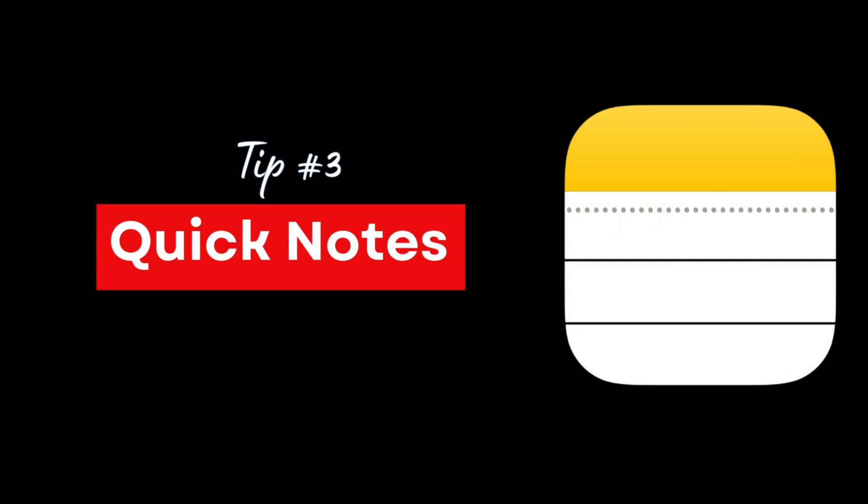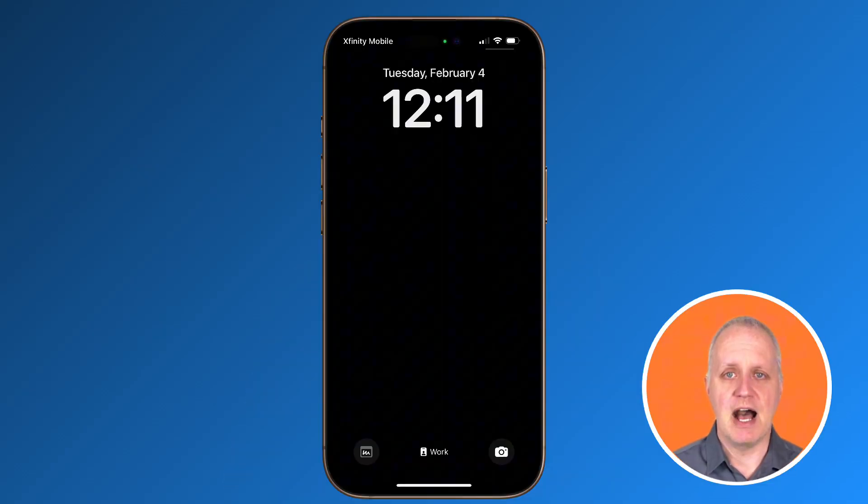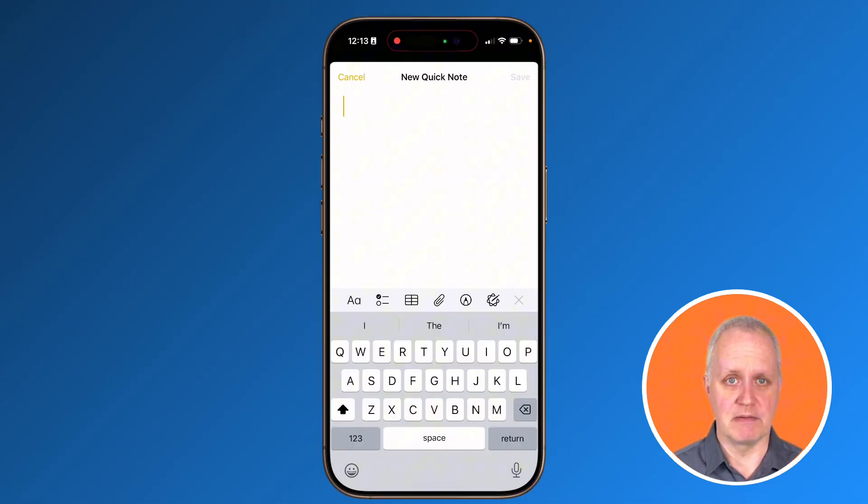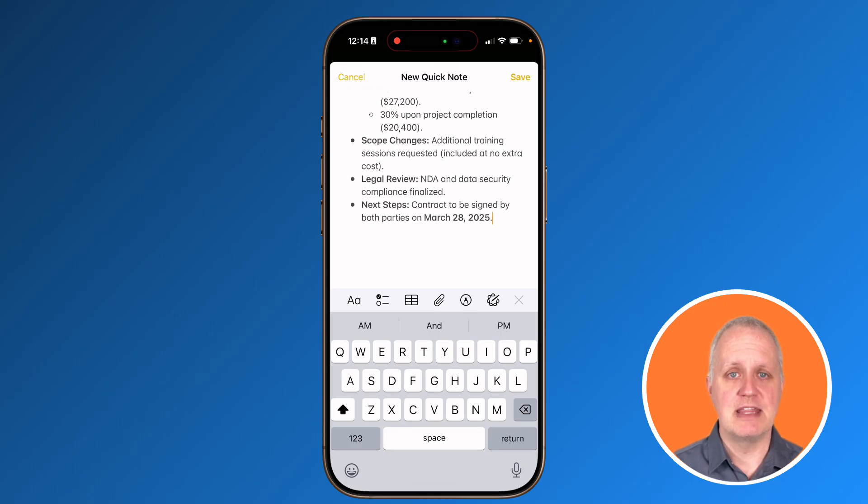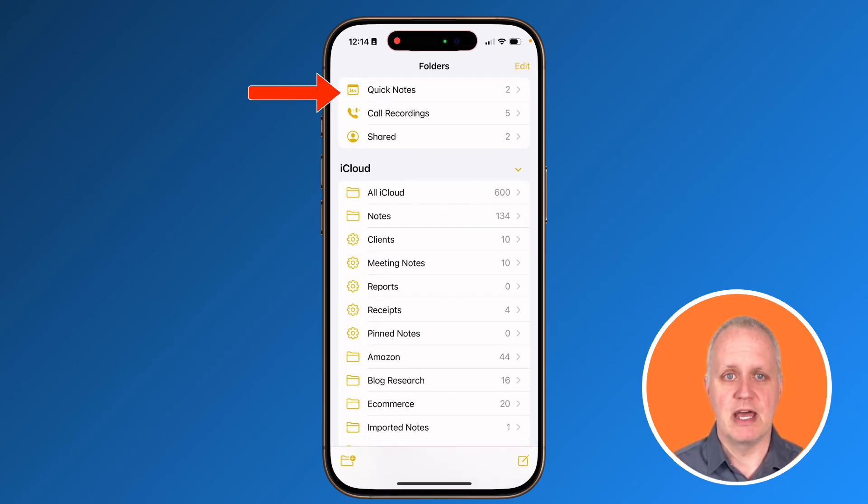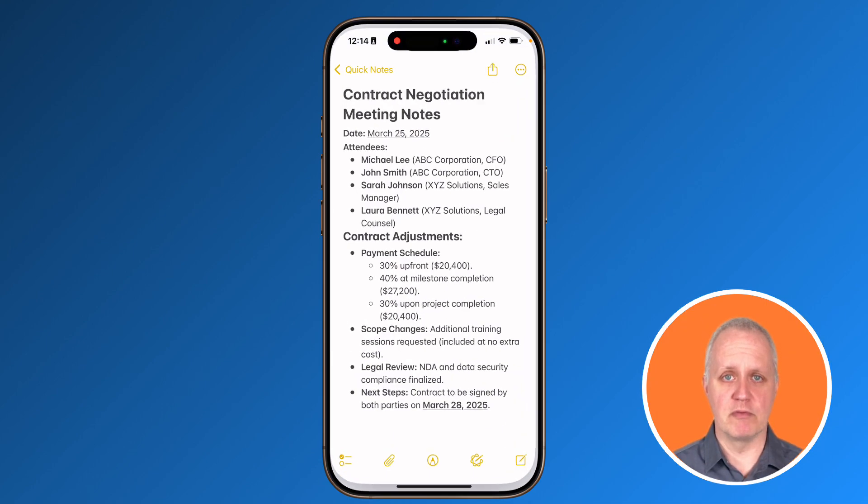As a small business owner, ideas, tasks, and reminders can pop up at any moment. Quick notes allows you to capture important information instantly without disrupting your workflow, whether you're in a meeting, reviewing a contract, or researching a new business strategy. No more scrambling for a notepad or losing track of details. First, I've added quick notes to my lock screen so I can just tap it and begin typing. Add all the relevant information, then later when I go into notes, just go to the quick notes folder, and I can categorize it, add additional links, and more information.